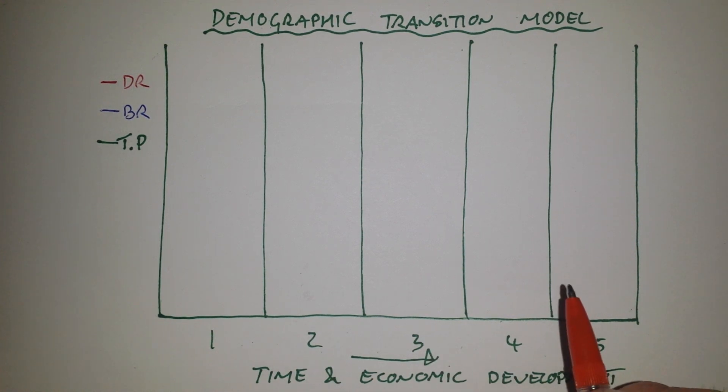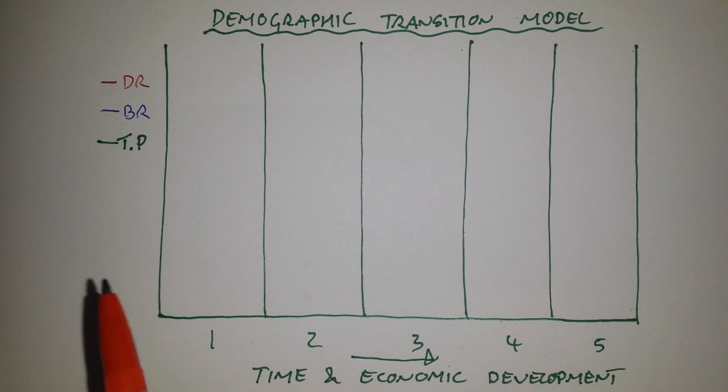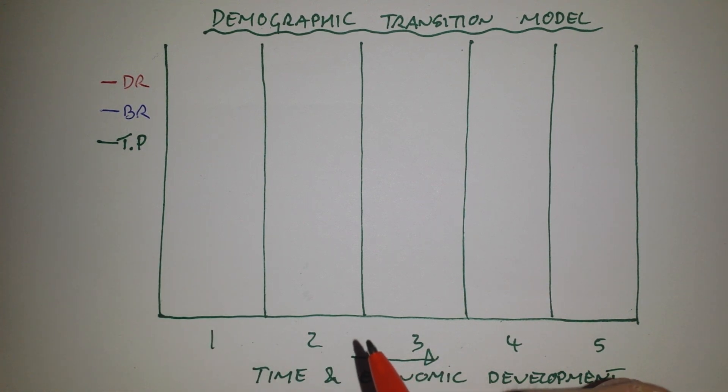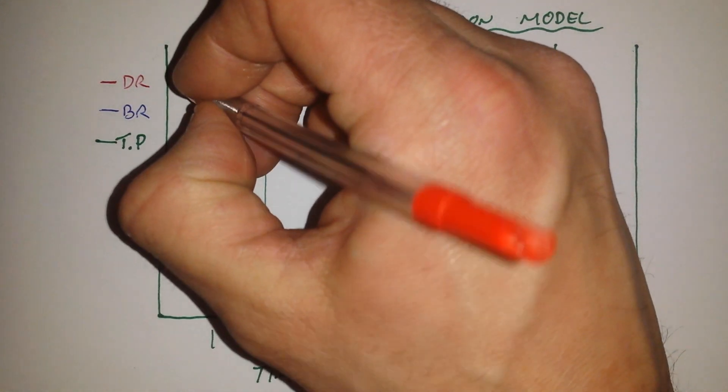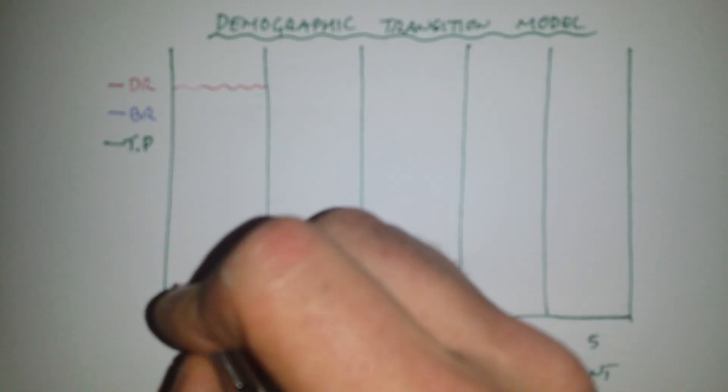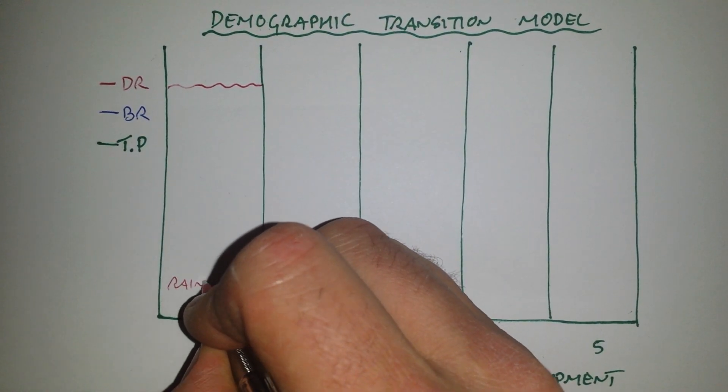There's five stages on the model, the first stage being furthest back in time or the most primitive society. The first line I'm going to draw on here is a death rate line. So it's stage one, furthest back in time or maybe a rainforest tribe.